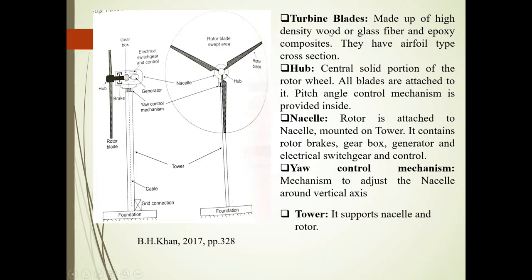Turbine blades. These blades are made up of high density wood, or glass paper, or epoxy components. They have an airfoil type cross-section. These are the rotor blades.